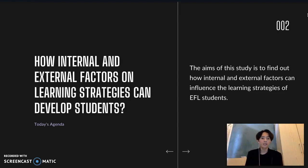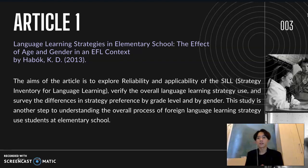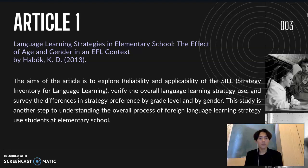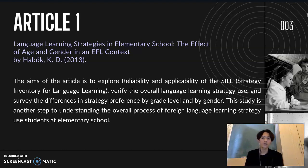Let's take a look at the first article. The first article is by Habuk (2013), titled 'Language Learning Strategies in Elementary School: The Effect of Age and Gender in an EFL Context.' The aim of the article is to explore the reliability and applicability of the SILL (Strategy Inventory for Language Learning), verify the overall language learning strategies used, and examine the differences in strategy preference by grade level and by gender.